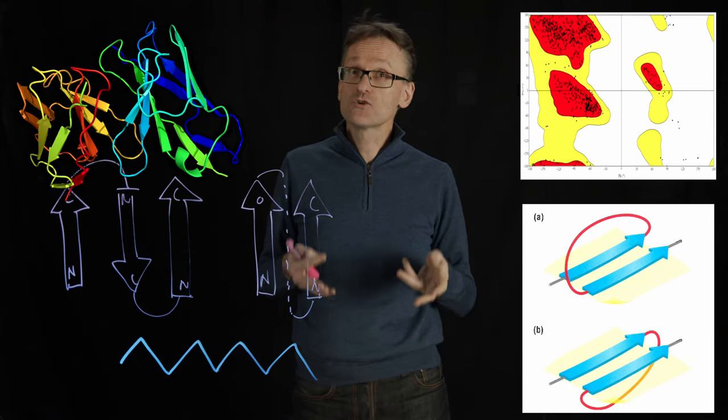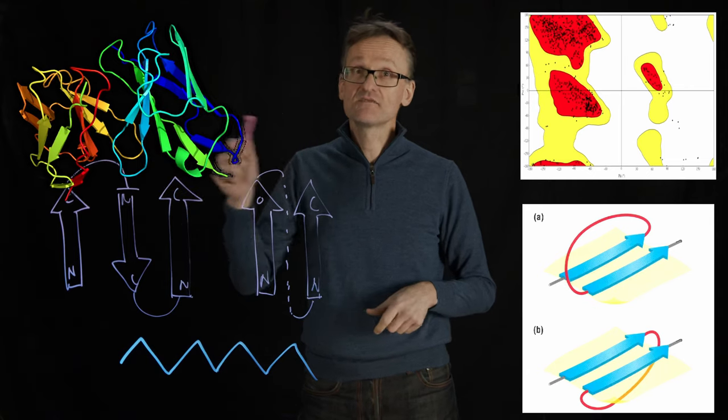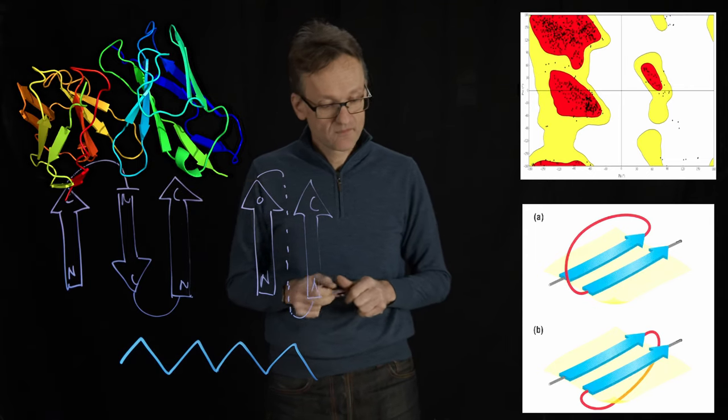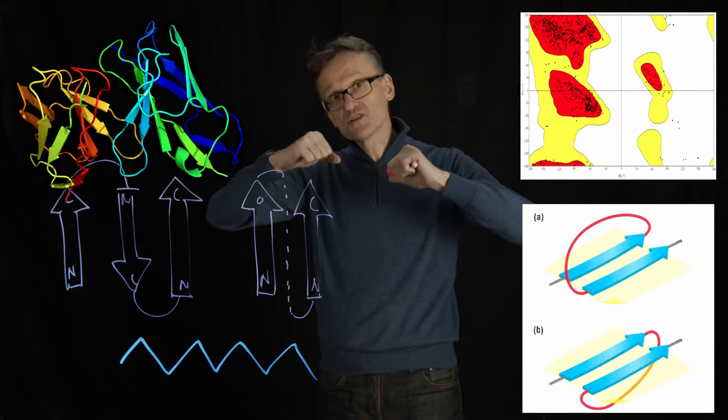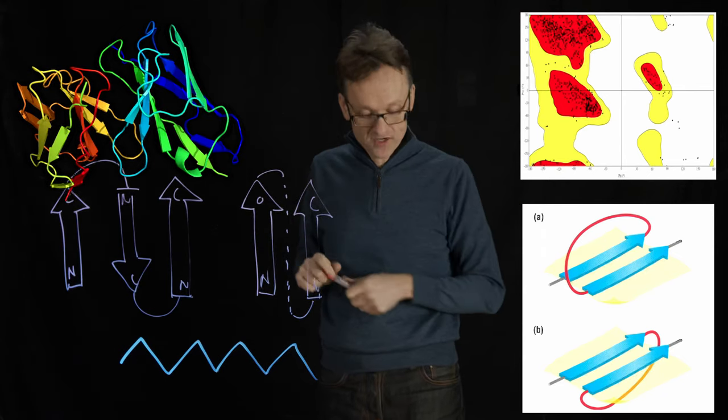But again, that's only needed when they are parallel. If they are anti-parallel, this effect is less strong. So as a result of that, you're always seeing a bit of twist to sheets, but that's because it's the most stable structure.